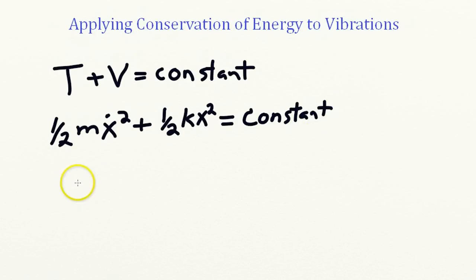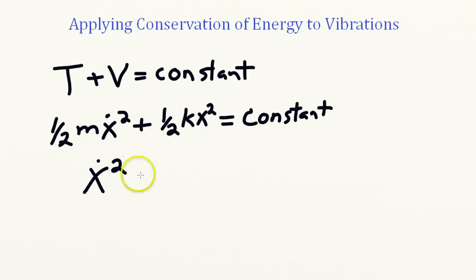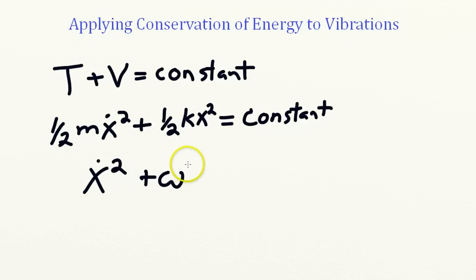Now I'm going to manipulate this expression a bit. First, dividing by m over 2, the leading term here. And I'll replace k over m with the frequency. So I'll write it this way: x-dot squared — that's the time derivative of x squared — plus omega squared x squared is constant.